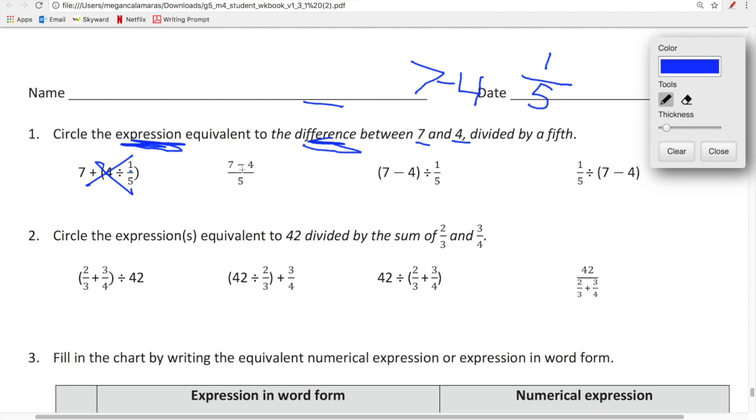Seven minus four over one fifth is not right either because we're looking for the expression equivalent to the difference between seven and four. So this is a fraction not an expression. So this one doesn't work either.